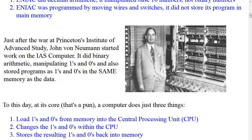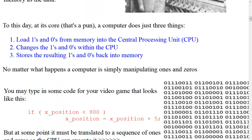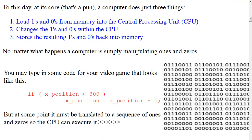To this day, at its core — and that's a pun — a computer does just three things. First, load ones and zeros from memory into the central processing unit, or CPU. Second, change the ones and zeros within the CPU. And finally, store the resulting ones and zeros back into memory. No matter what happens, a computer is simply manipulating ones and zeros.